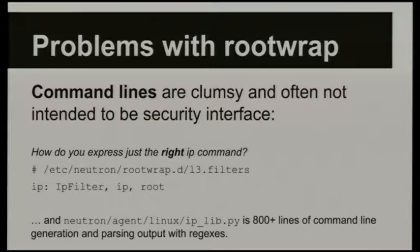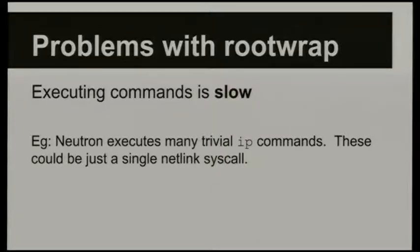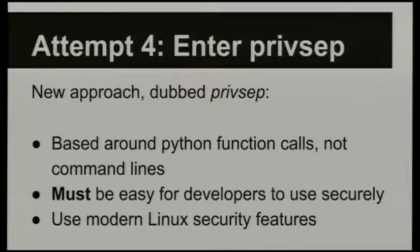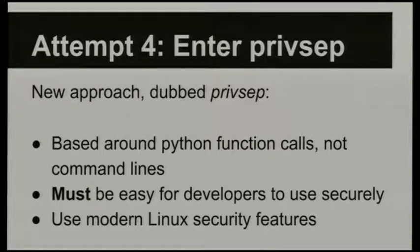It would be much better if there was a programmatic interface for these things. A lot of what Neutron does is single-line IP commands — even with RootWrap Daemon, you're still executing a fresh IP command to run what is fundamentally a single netlink syscall. That's a lot of overhead. Even in Python, there's not actually a lot of code between you and running a syscall. So this is the new thing being worked on in Oslo — what I'm trying to do is change the API. Instead of talking about command lines, we're going to talk about Python function calls.